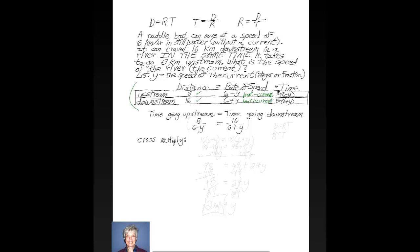So that gives us 6 minus y for upstream and 6 plus y for downstream. Since the times are equal, the time going upstream and the time going downstream, because we're told in the story problem in the same time, so that means the times are the same.